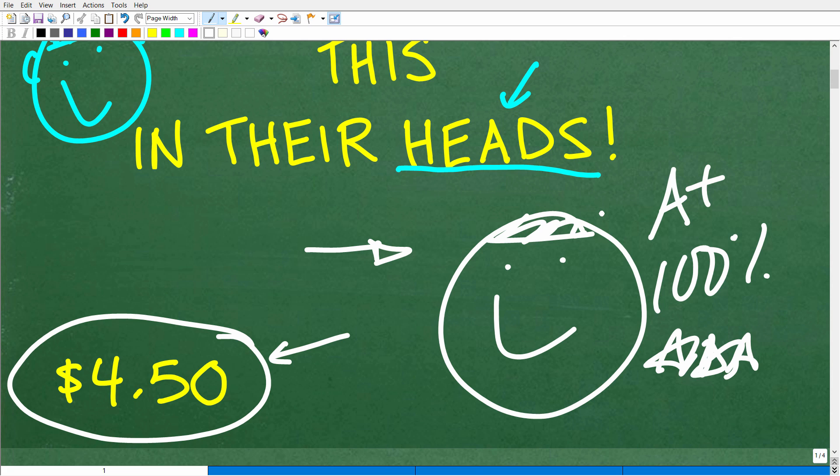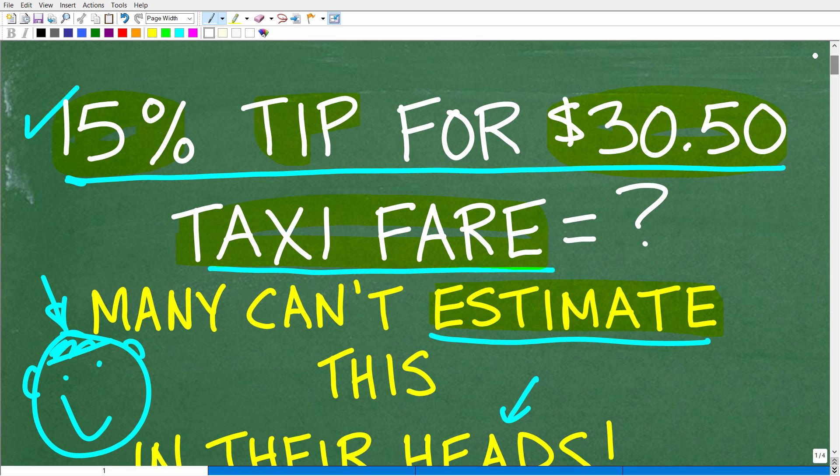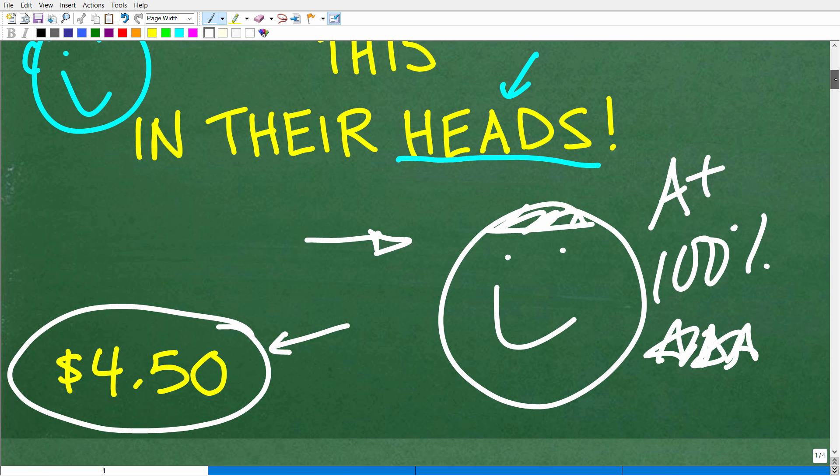But all jokes aside, if you got this right, that's fantastic. Now, this particular problem has to deal with percent. And this very well could be a real life type of situation that all of us encounter, especially if you go to a restaurant, have dinner, and you're thinking about leaving the waitress or the waiter a particular tip. So you're doing these quick calculations involving a percent.